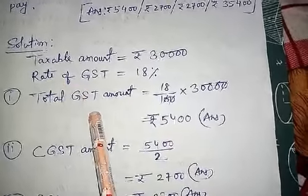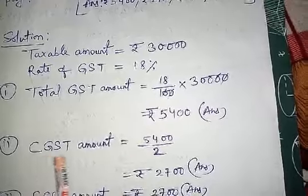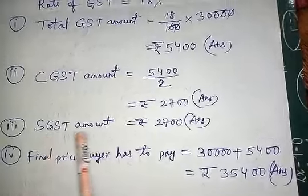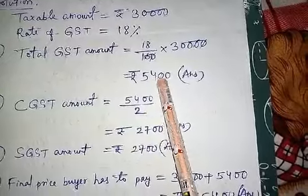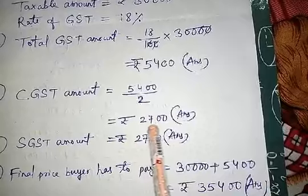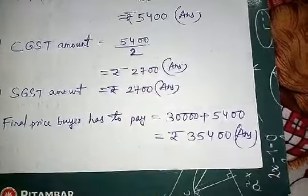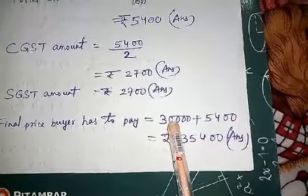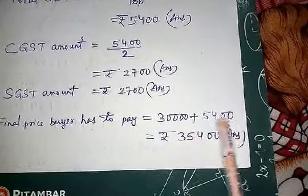Whatever GST is collected, it is divided among two governments — central government and state government. The central government's part is called CGST and the state government's part is called SGST. They are equally divided: 50% each. So dividing 5,400 by 2, we get CGST = 2,700 and SGST = 2,700. Final price = 30,000 + 5,400 = Rs. 35,400.